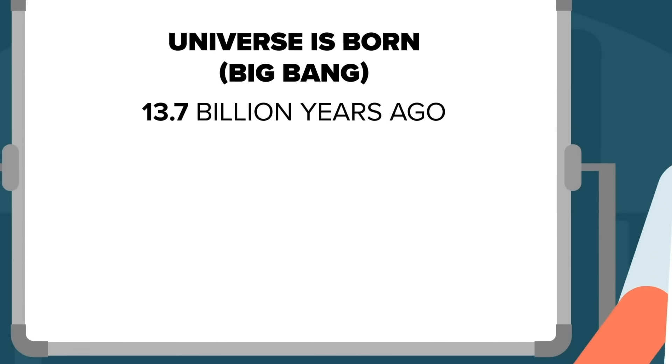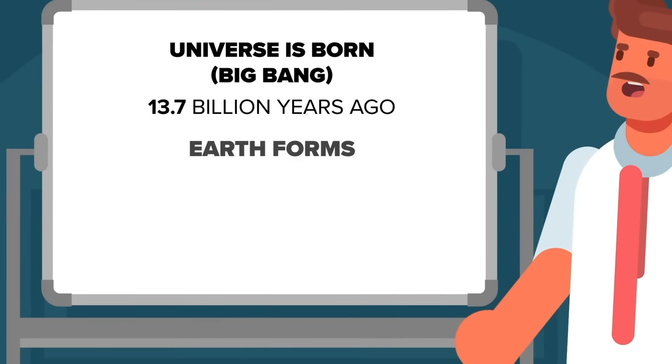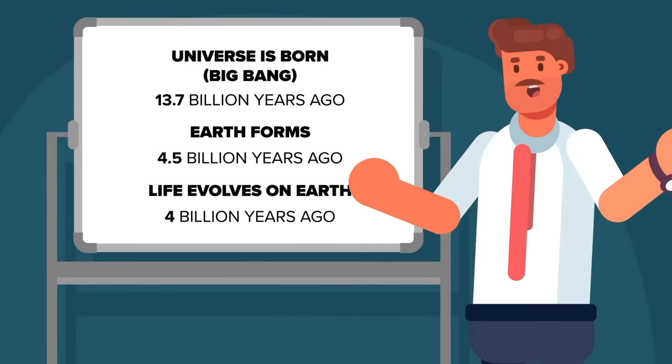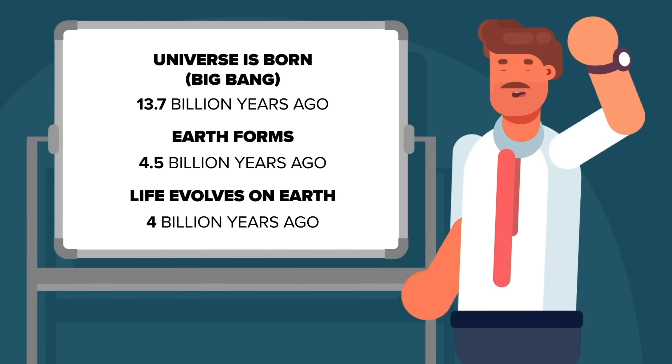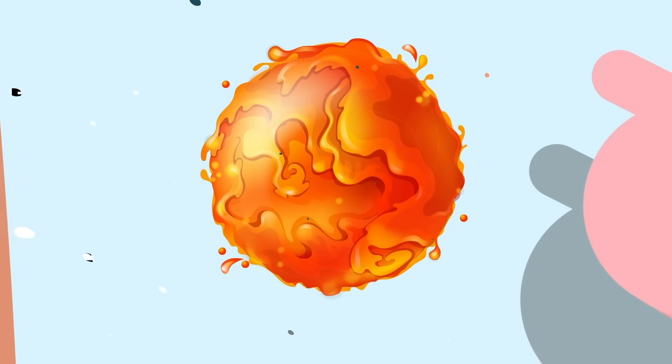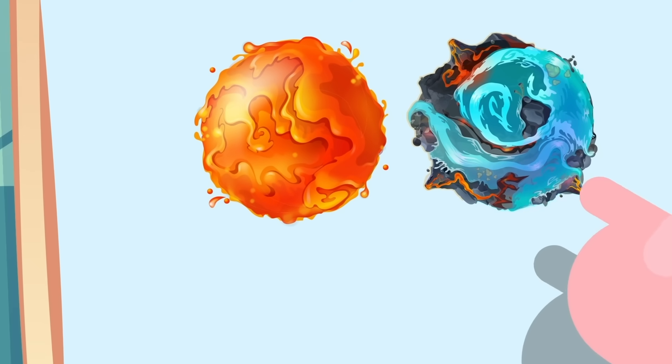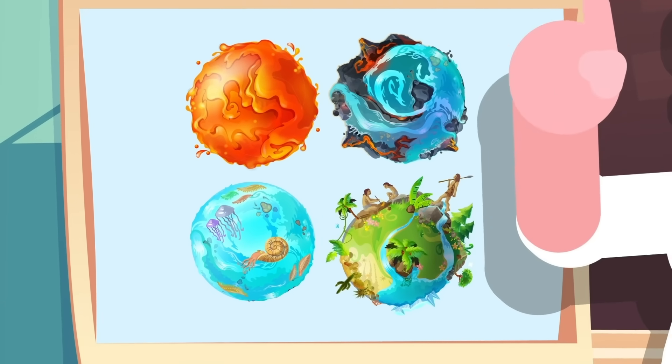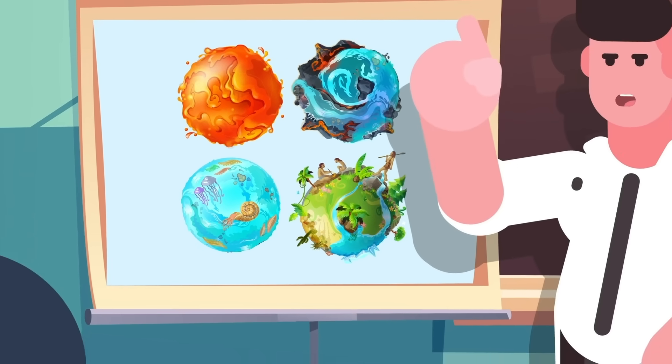The universe is 13.7 billion years old, with Earth being about 4.5 billion years old. But about 4 billion years ago, life evolved here, a cosmic error that has been universally hated by all. What this hints at is that life arises almost as soon as it possibly can.